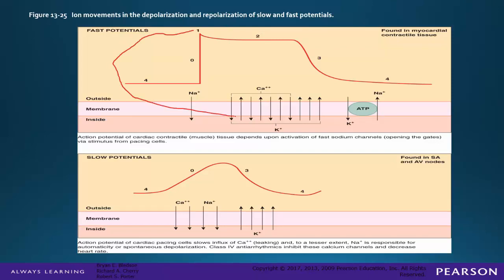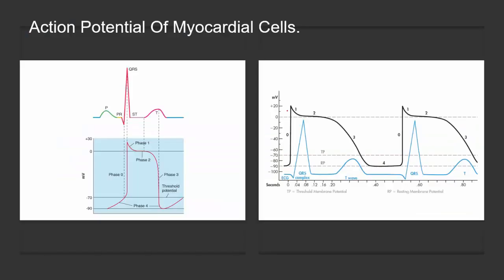This process must occur for the myocardial contractile tissue to actually contract. During the time of the QRS — the ventricular contraction — this is phase zero. This is the point at which sodium rushes in, causing ventricular contraction.